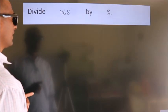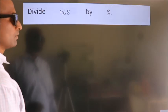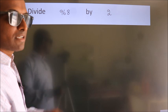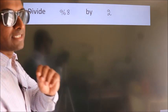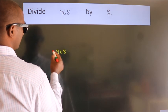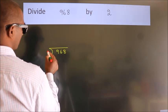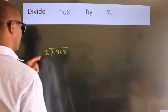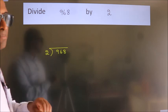Divide 968 by 2. To do this division, we should frame it in this way. 968 here, 2 here. This is your step 1.